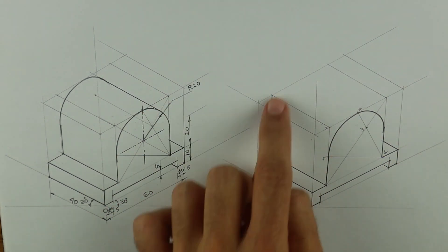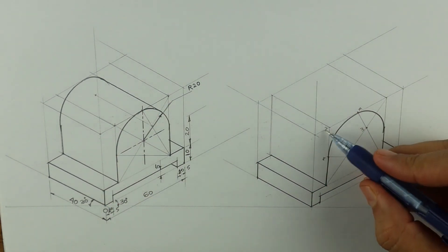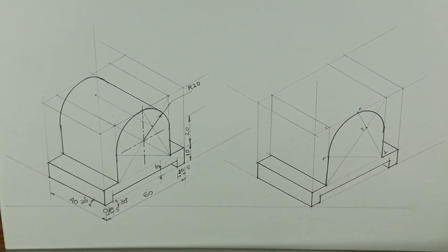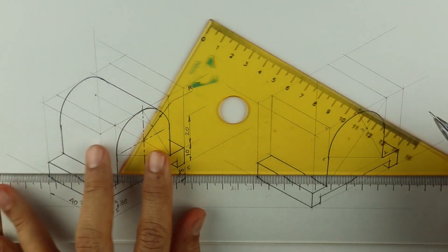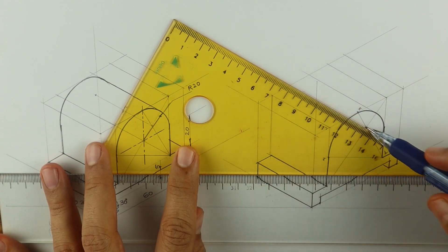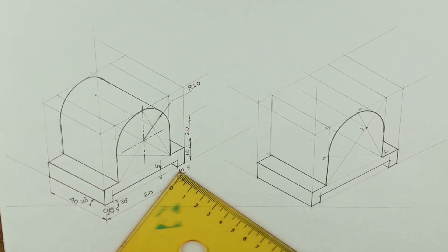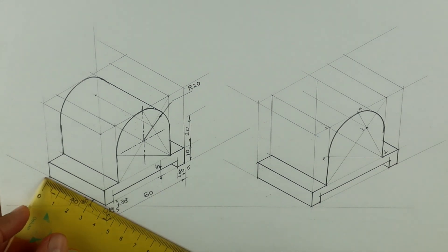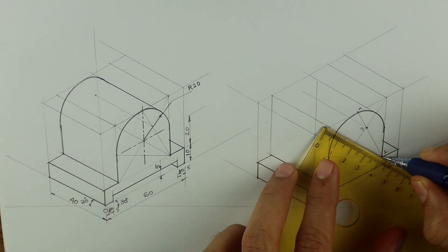Now after drawing this we can draw the same thing behind by taking the 40 rhombus behind, or we have one shortcut method where we project all these lines behind. First we'll draw tangent and draw lines from 3 and 1. How much do you have to go behind? 40. So I will mark 40.